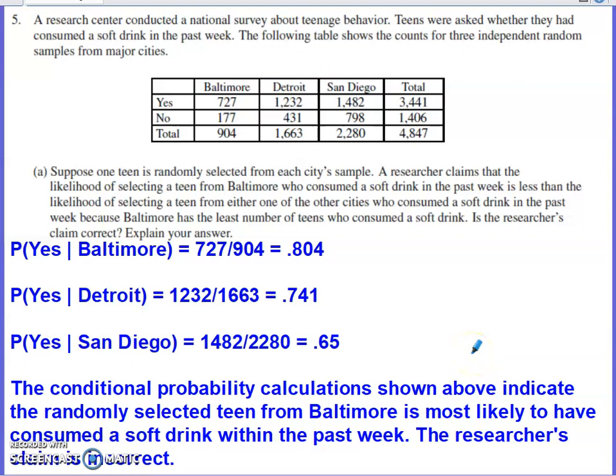In this video, we'll discuss problem number five from the 2021 AP Stats free response set. Problem number five is a problem that has some parts rooted in probability and then another part rooted in inference. So this doesn't have one theme — it kind of switches midway through the problem.